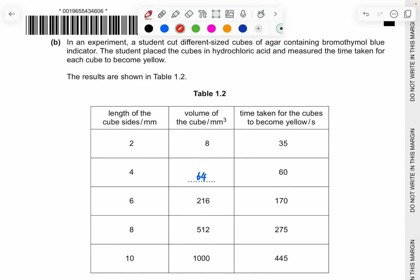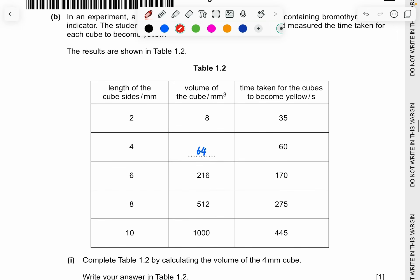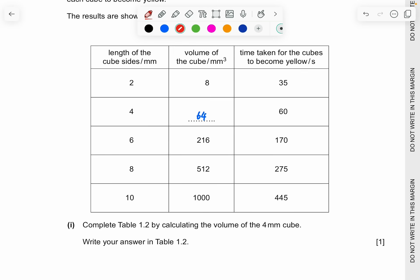So part B. In an experiment, a student cut different size cubes of agar containing bromothymol blue indicator. The student placed the cubes in the hydrochloric acid and measured the time taken for each of the cubes to become yellow. The results are shown. So you can see that for the answer, complete table 1.2 to calculate the volume of 4 mm cube. So the answer is 64. So how are you going to get this answer? It's just by, you say it's a cube. So each side, it's like for example, each side is 2. If it's volume, it will be the length, the width, and the height. It will be 2 times 2 times 2. For this case, it will be 4 times 4 times 4. So the answer is 64. Simple mathematics.